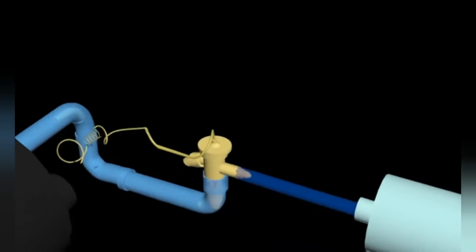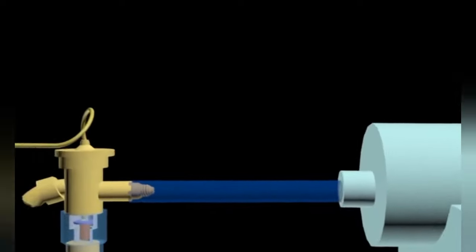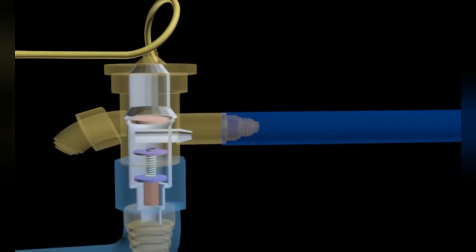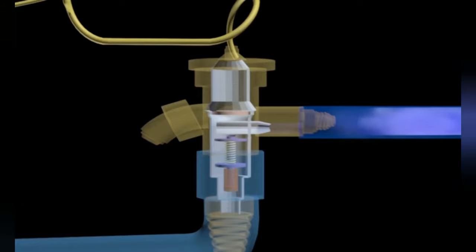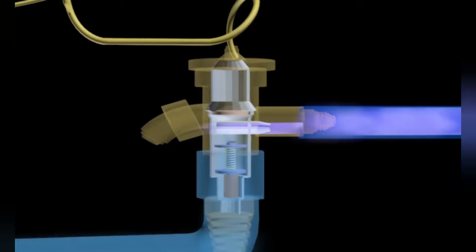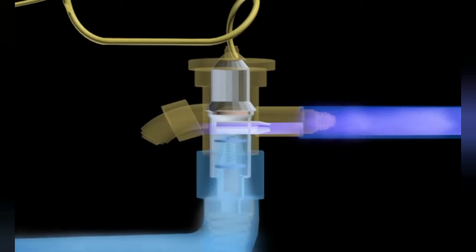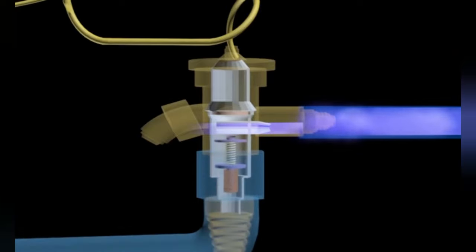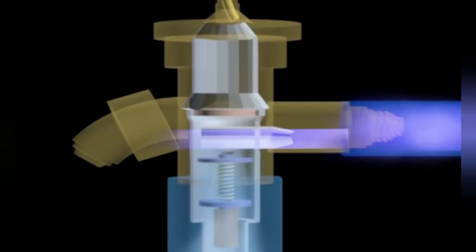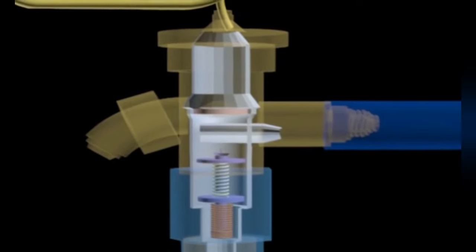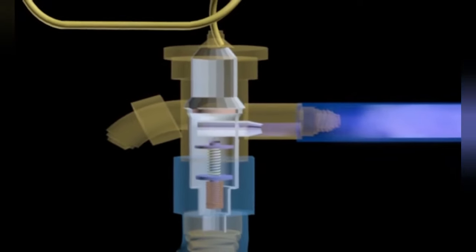The expansion valve serves to reduce the pressure and control the flow of refrigerant going into the evaporator. When the pressure of the refrigerant drops drastically, the temperature also drops dramatically to below the chilled water temperature. In a centralized system, a TXV thermal expansion valve type is used, which operates according to the temperature of the refrigerant coming out from the evaporator.